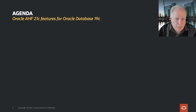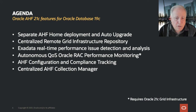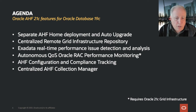For 21C, there are a number of new features that are applicable to those of you running 19c databases, and they fall into two categories. Some are deployable just in your normal 19c deployment; others will require a 21c grid infrastructure with 19c databases being hosted. We'll be talking about the new separate home deployment for AHF, centralized grid infrastructure repository deployment, real-time performance issue detection optimized for Exadata, autonomous RAC performance monitoring with QS management, AHF configuration and client compliance tracking in ORAchk reports, and a new AHF Collection Manager.